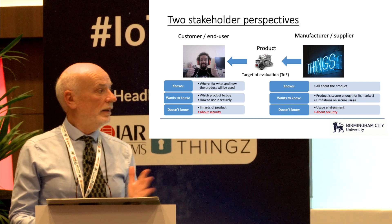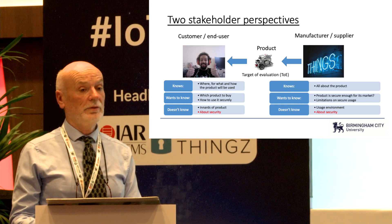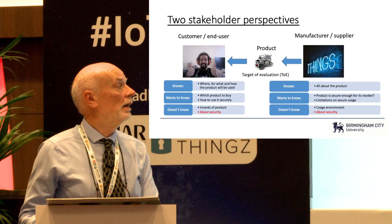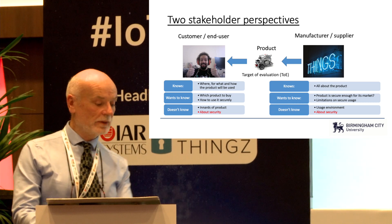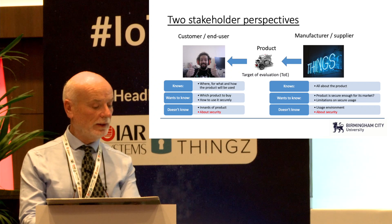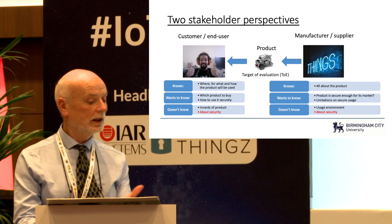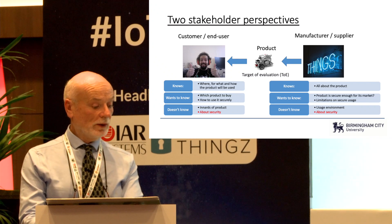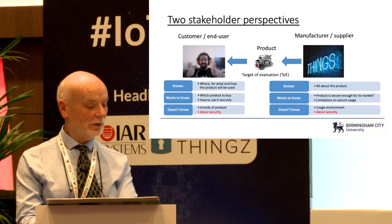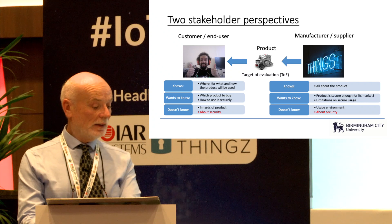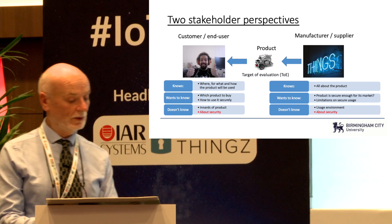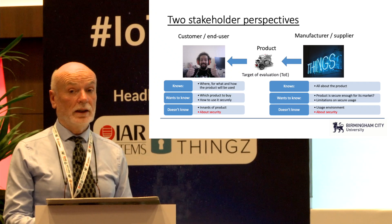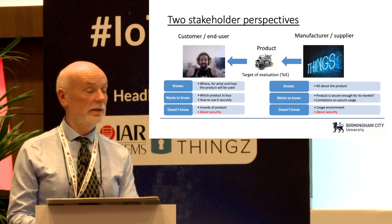The manufacturer doesn't have a particularly strong idea of the usage environment unless the functionality of the product is very specific. On the other hand, the end user or customer has a pretty good idea of where, for what, and how the product will be used. They want to know which amongst several product offerings to buy, and also how to use the product securely — but they don't know much about the internal details of the product. And neither of them typically will know a great deal about security.